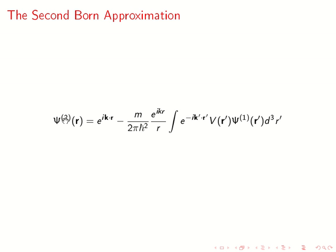We replace the ψ that was in our initial equation with this first Born approximation. And that's the second Born approximation.